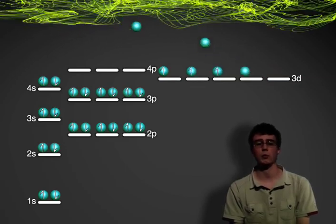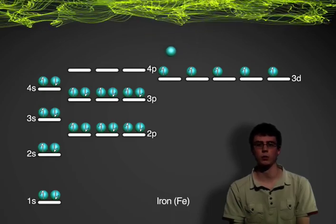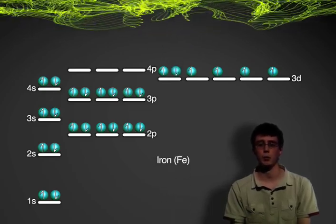They start again by filling each orbital one by one and only pair up when forced to do so, as seen here by iron.